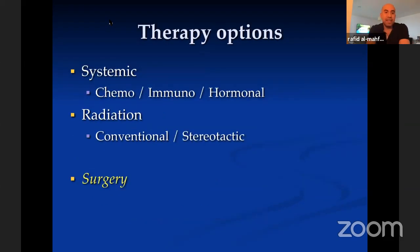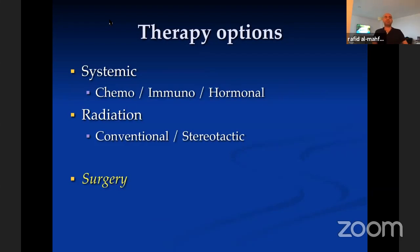The treatment options are generally one of three: systemic treatments such as chemotherapy, immunotherapy, or hormonal therapy; radiation treatments; and surgery. As a neurosurgical talk, we're going to be mostly concentrating on the role of surgery, but that's not to forget the other pillars of management.